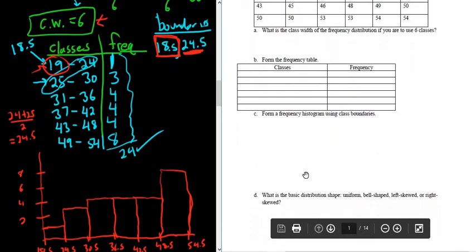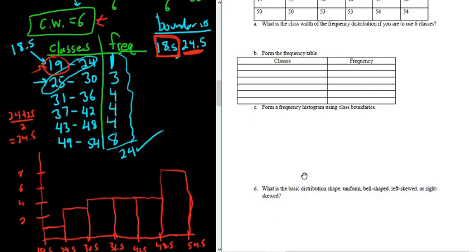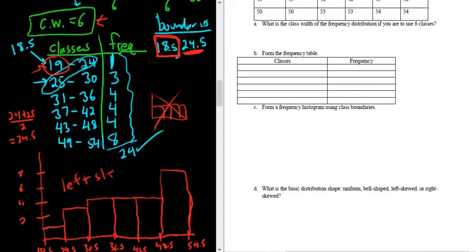There's another question. What is the basic distribution shape? Uniform, bell-shaped, left-skewed, or right-skewed? Bell-shaped means it's bell-shaped. It's not bell-shaped in this case. Uniform means it's flat. Uniform means it's going to look like that, but that's not what we have. This one is left-skewed, and the reason is the tail is to the left. Wherever the skinny part is, tail to the left, skewed left. Skewed right would have the skinny part on the other side. That's it. I hope this video made sense.